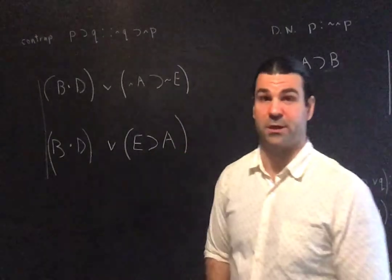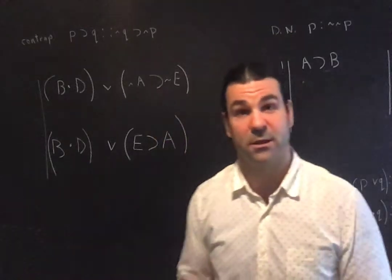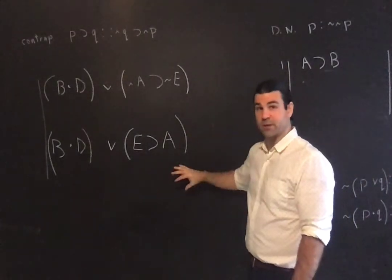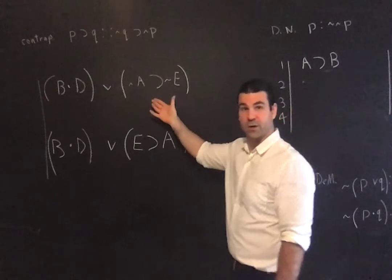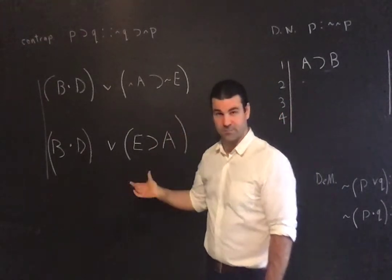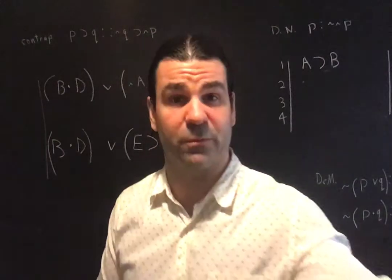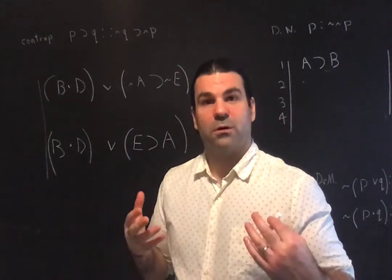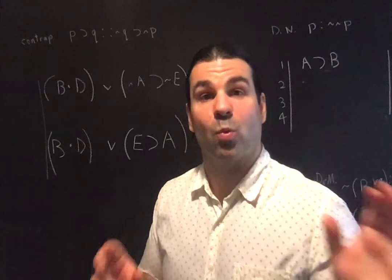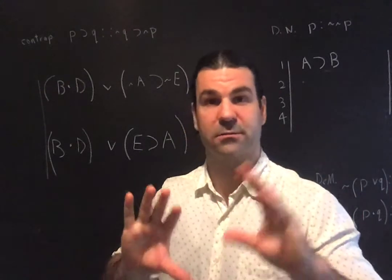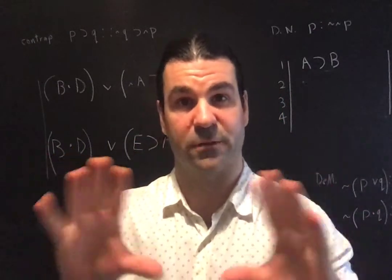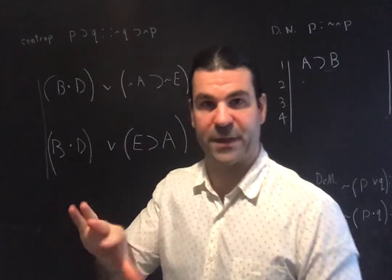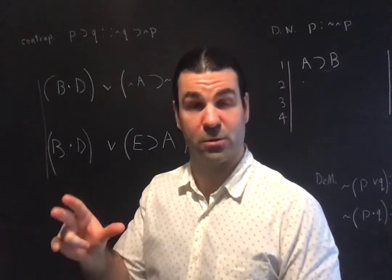The second thing you're allowed to do, also illustrated in this example, is you can use the replacement rules on sub-formulas. You certainly can't do that with the rules of inference — as I explained in part one — but you can do so here. You can apply the rules merely to sub-formulas. Let me explain more clearly why the fact that the two statement forms stand in a relation of logical equivalence justifies using these rules on sub-formulas.